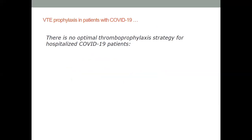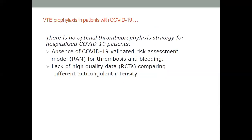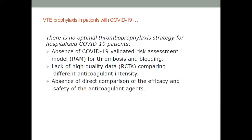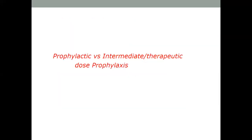The ongoing controversies relate to the intensity and duration of prophylaxis, arising from the lack of an optimal thromboprophylaxis strategy. We don't have any validated risk assessment model for thrombosis and bleeding specific to COVID-19, unlike medical patients where we use tools like the Padua risk score. There is also a lack of high quality data comparing different anticoagulant intensities, and no ample randomized trials to guide the duration of prophylactic anticoagulation.